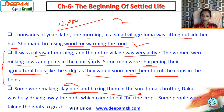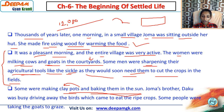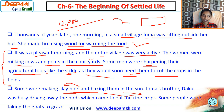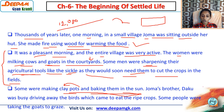They made clay pots and baked them in the sun. Today we bake bricks in kilns using heat, but earlier that facility was not there, so they baked clay pots using sunlight. The sun's heat was used to harden the clay pots.